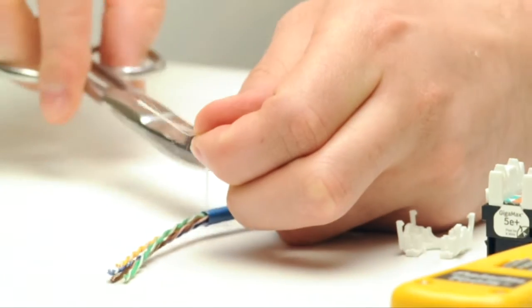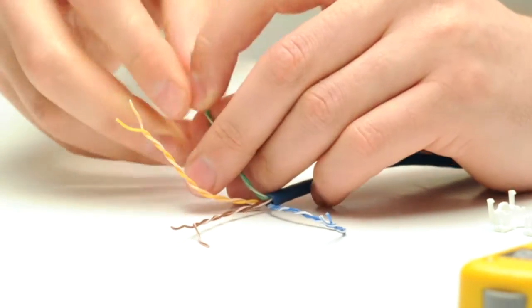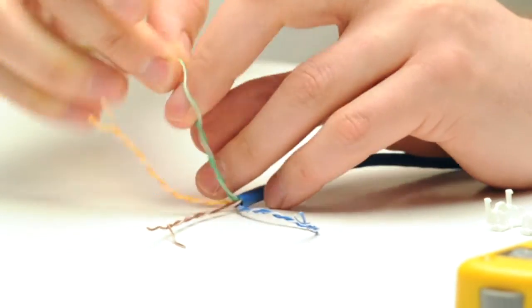Take your scissors and cut the string that's inside the jacket, then begin to fan out the pairs. You'll notice that they are color-coded.